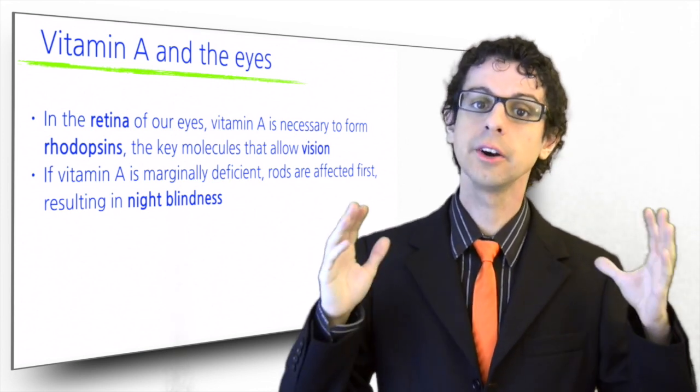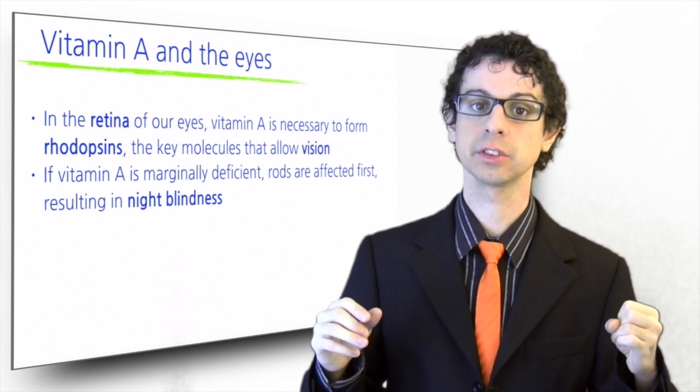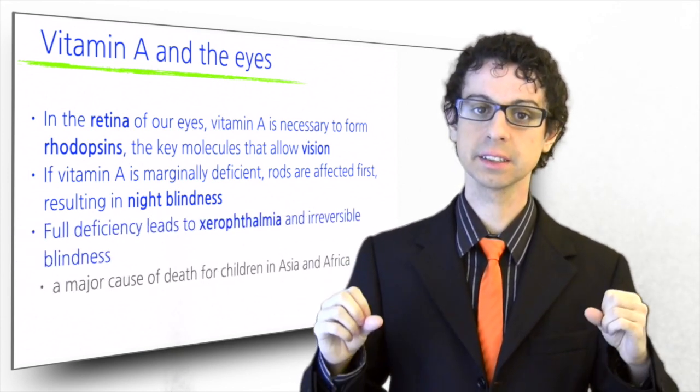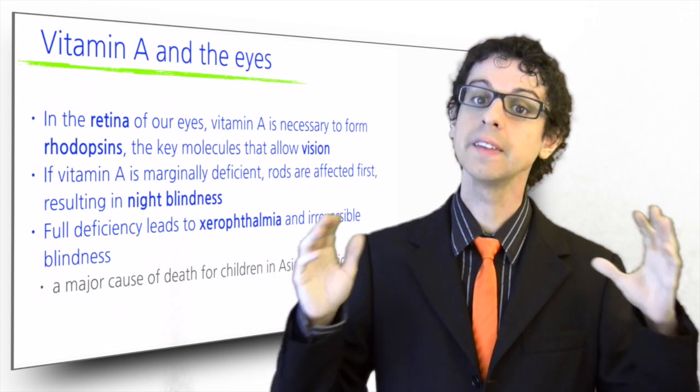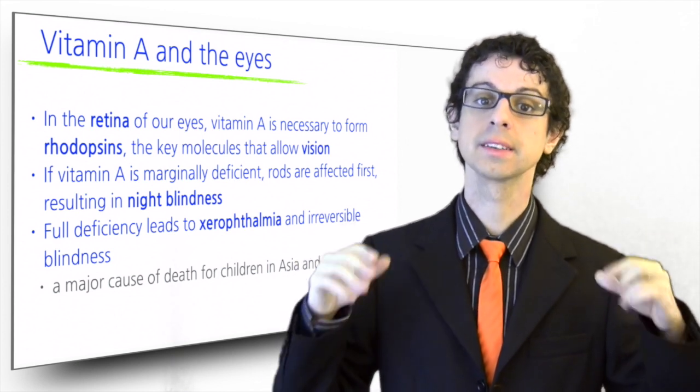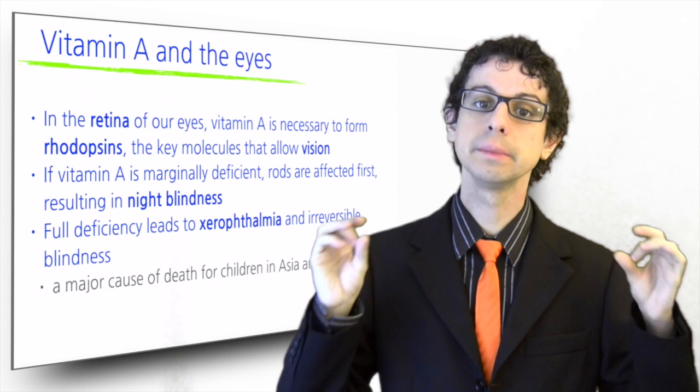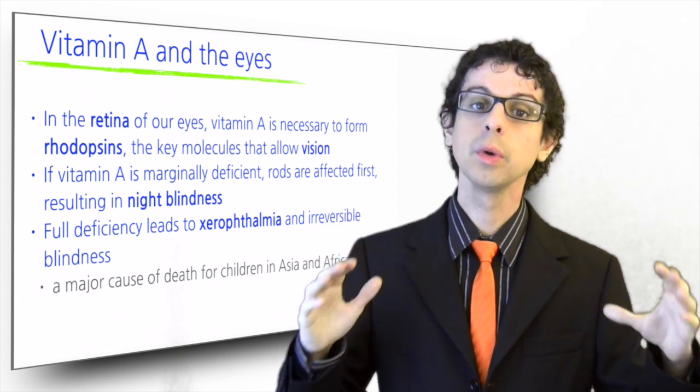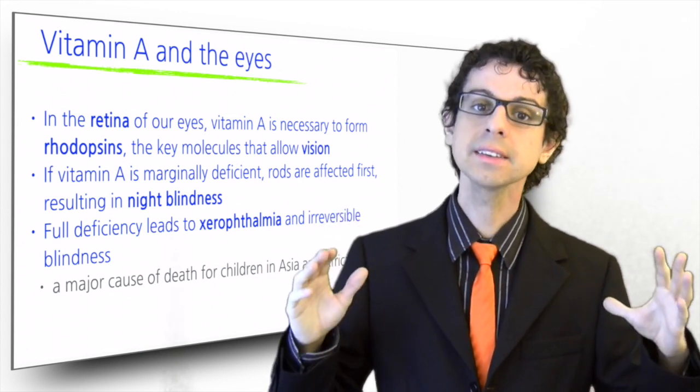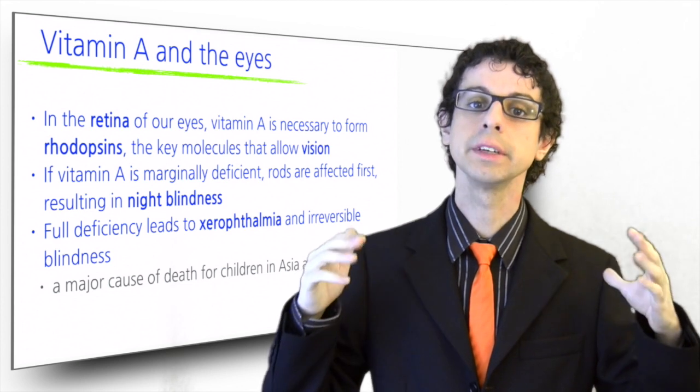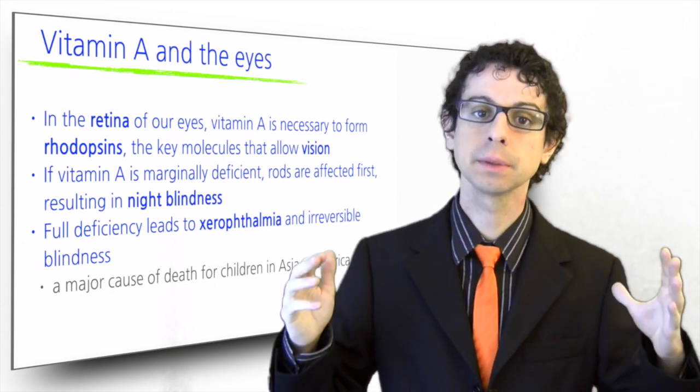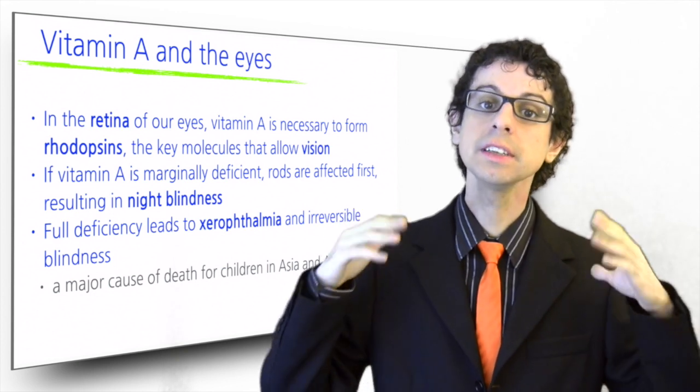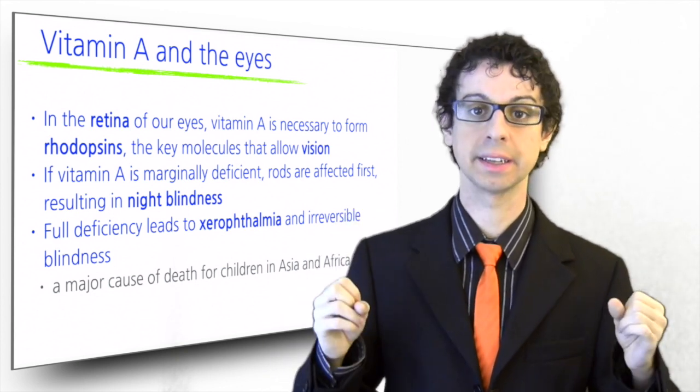While night blindness is an early symptom of vitamin A deficiency, full and extended deficiency can result in much more serious consequences. And in particular, a disease called xerophthalmia, which literally means dry eye. Without vitamin A, the cells lining the cornea can secrete mucus. The eye gets dry and becomes more susceptible to infections, which easily spread and eventually lead to blindness.